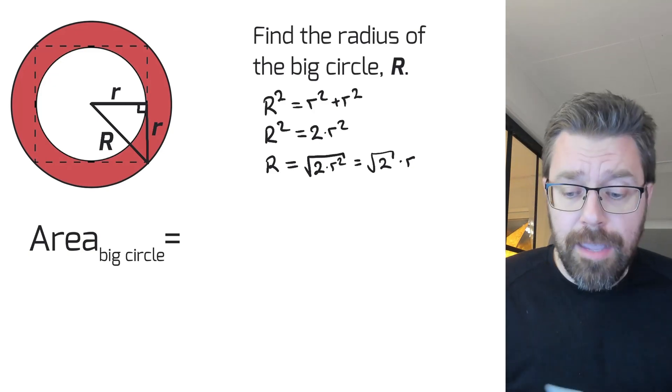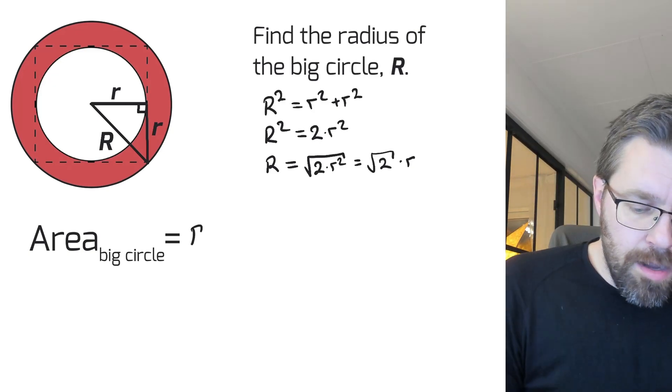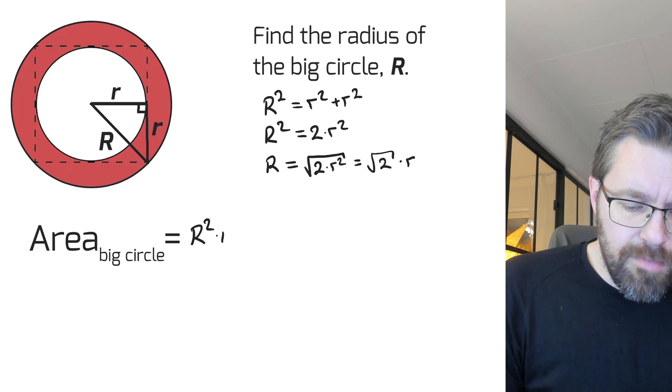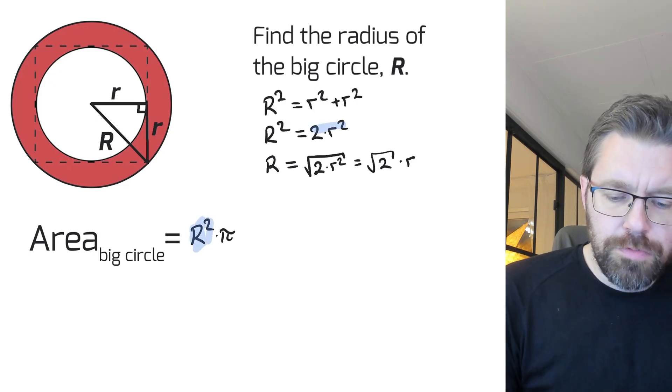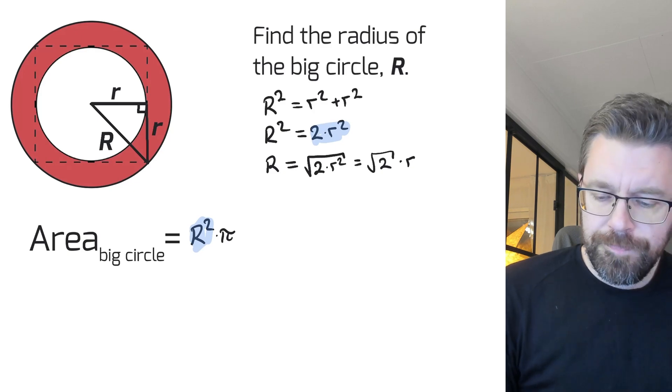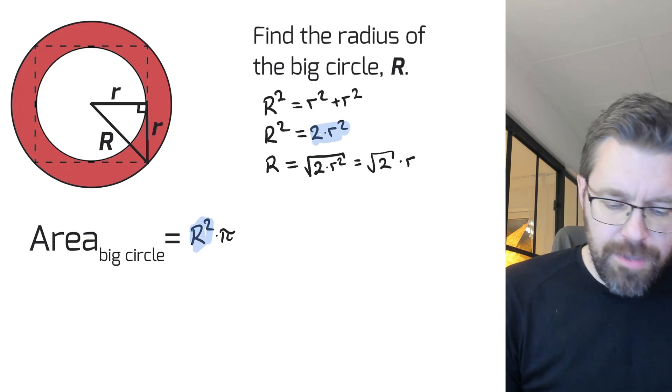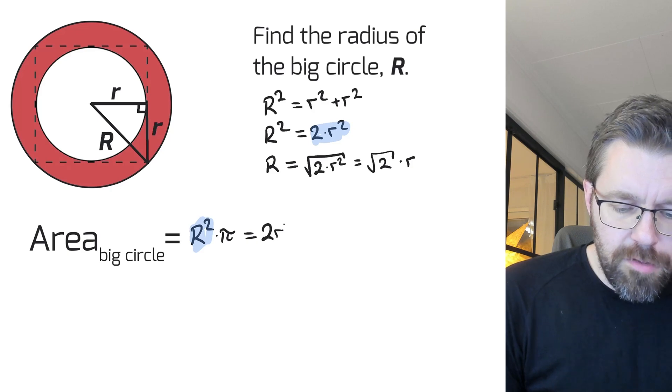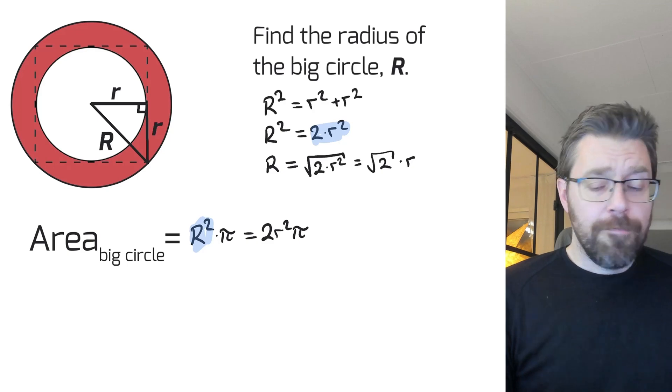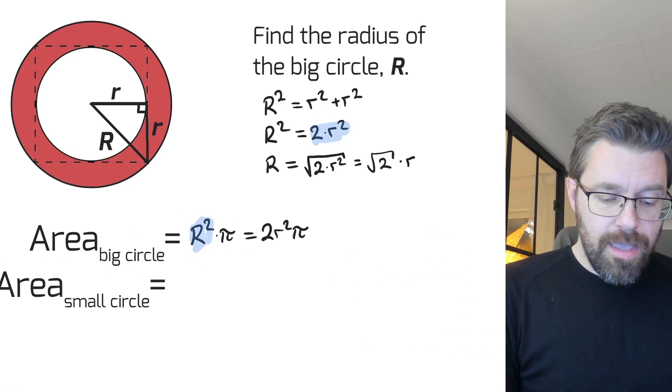So big R squared times pi, and big R squared equals two r squared, so the area of the big circle equals two r squared times pi. And then we have the area of the small circle.